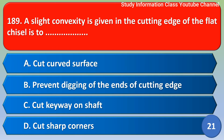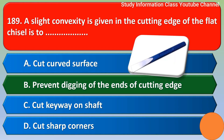Next question: a slight convexity is given in the cutting edge of a flat chisel in order to: option A cut curved surfaces, option B prevent digging of the ends of the cutting edge, option C cut keyways on the shaft, option D cut short corners. The correct answer is option B: prevent digging of the ends of the cutting edge.